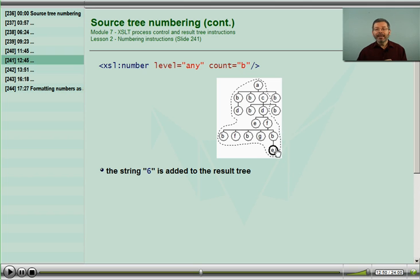Level equals any. From my current node, I am counting B's. I am not limiting this with the from, so I'm counting all of the ancestors and the preceding nodes, counting the B's. Notice, in this contrived tree, that these two B's are not being counted because they come after the E. They are in the following axis. They are not in my ancestry, and they're not in the preceding axis.